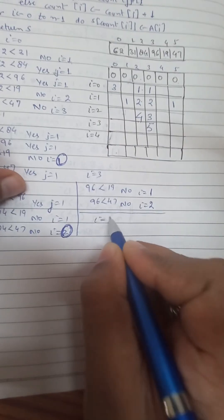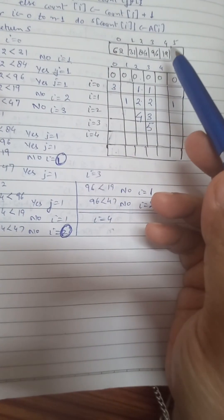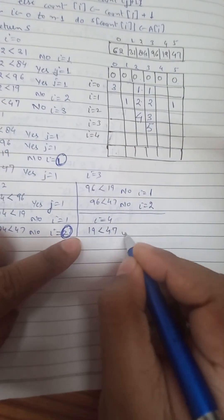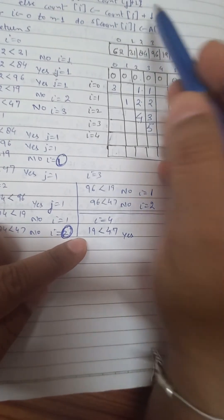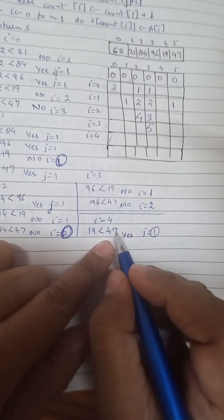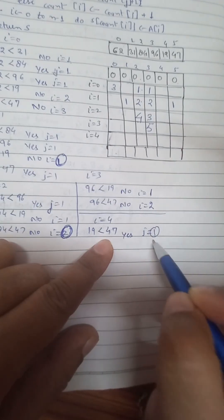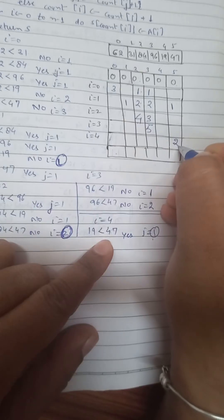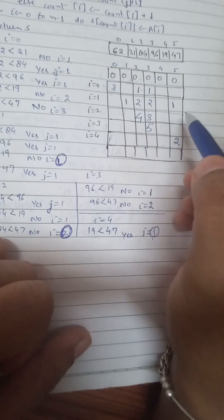When I value is 4, we compare the fifth element, 19. Is 19 less than 47? Yes, so J increments. 47 is already at 1, so it becomes 2. This completes all comparisons.